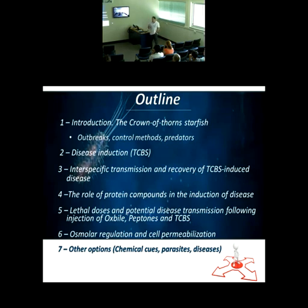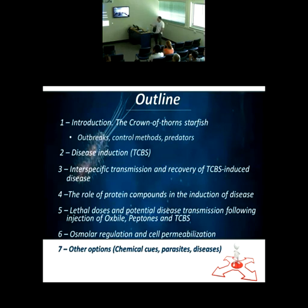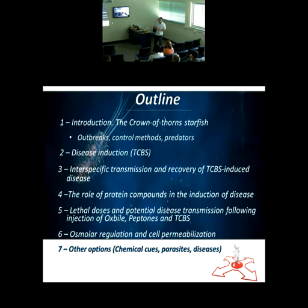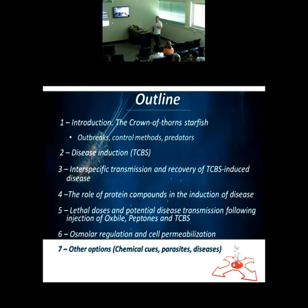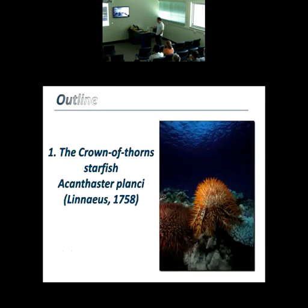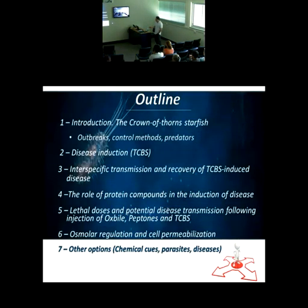After that, we also need to know what was the minimum dose required to kill the Crown of Thorns starfish, and what is the potential disease transmission following injection of oxgall — which is a protein produced by the liver — and peptones, which are made from many different things that you can use to kill the Crown of Thorns.